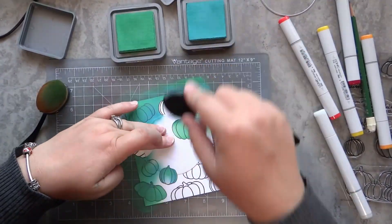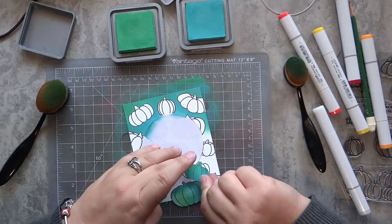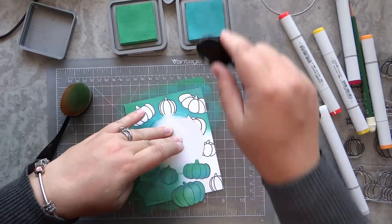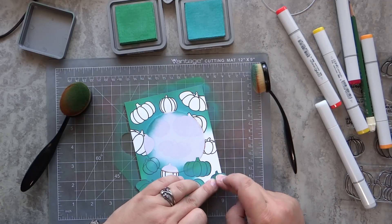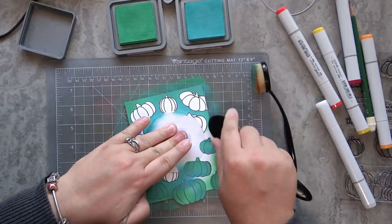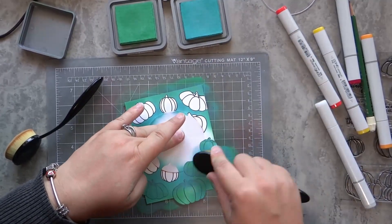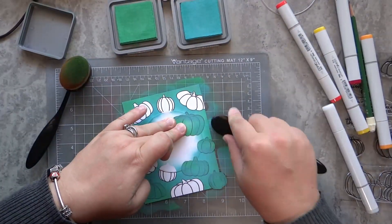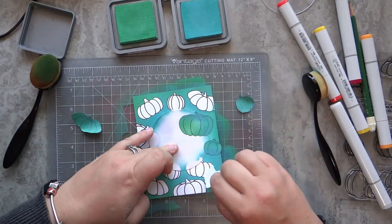I'm reusing the pumpkin mask as I go. I started off with the Peacock Feathers Distress Oxide ink in the areas that are the closest to the circle, then blend it in with Lucky Clover around the edges. Once I'm done with a section, I simply peel off that mask and place over the next same-sized pumpkin. Now that my background is teal, I can lift off all those masks.